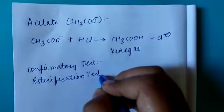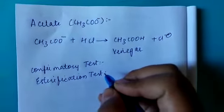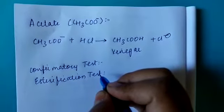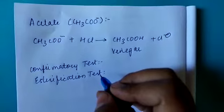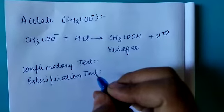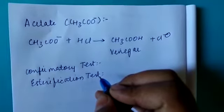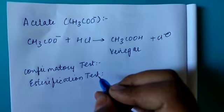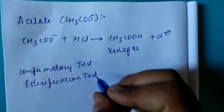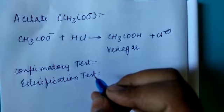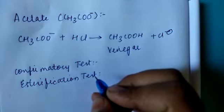So I will just tell you the process involved in the esterification test. First, we have to take the mixture of the substance. Then we have to add ethyl alcohol and then 5 drops of concentrated sulfuric acid. Then we have to heat it on the water bath for 20 minutes.